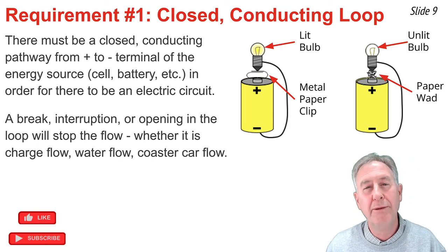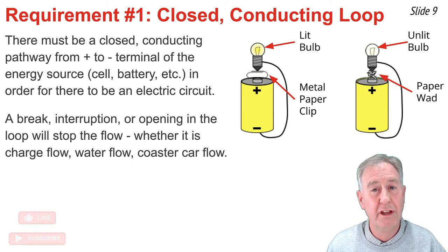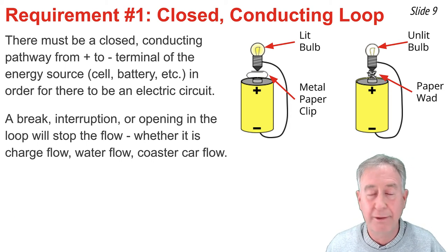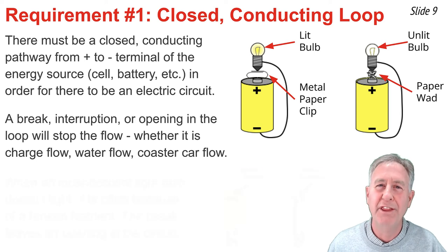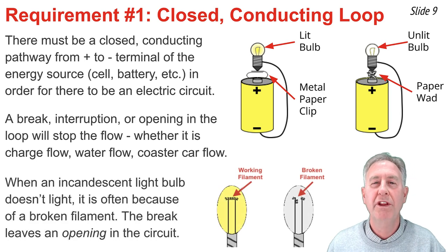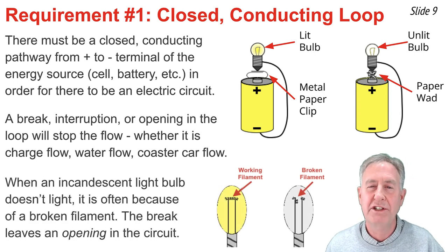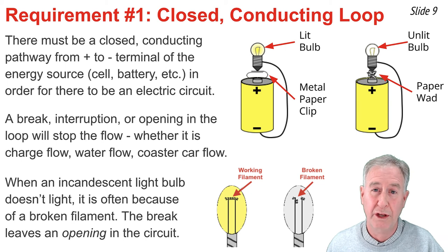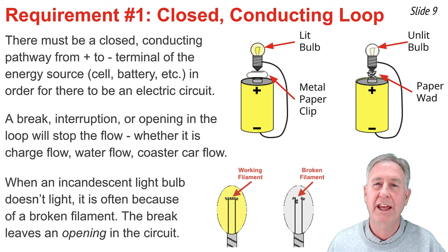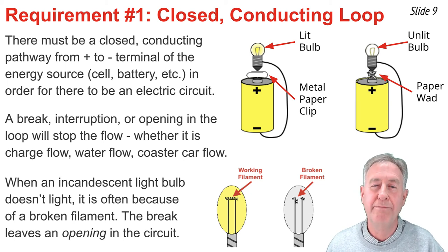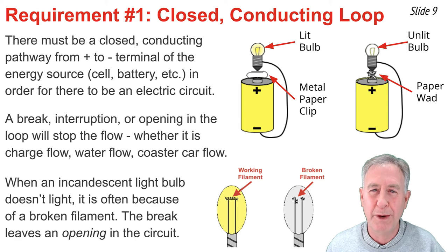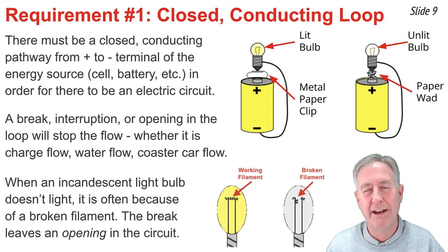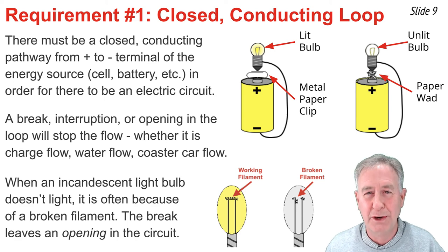You've probably flipped the switch in your home and noticed the light bulb doesn't light. The likelihood is that it's an incandescent light bulb and the filament has broken. A broken filament will interrupt the circuit, and we no longer have met the first requirement of having an electric circuit.